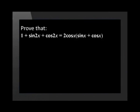Let's take a look at another example. Why don't you try this one before looking at the solution? Prove that 1 plus sin 2x plus cos 2x is equal to 2 cos x in brackets, sin x plus cos x. Once again, we need to work with one side of the equation and prove it equals the other side.